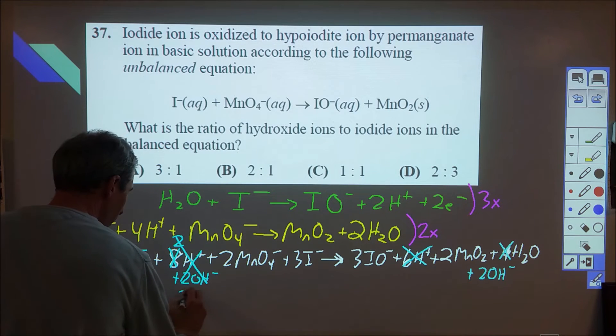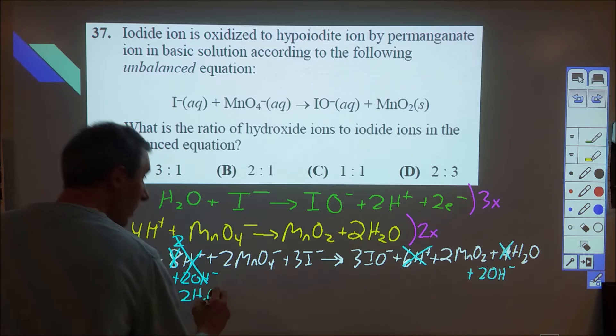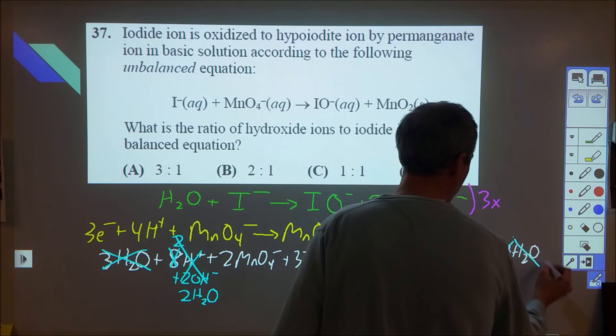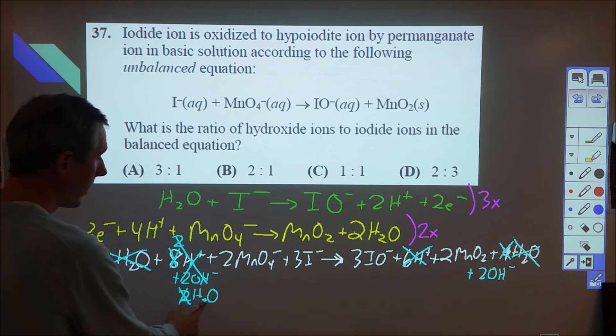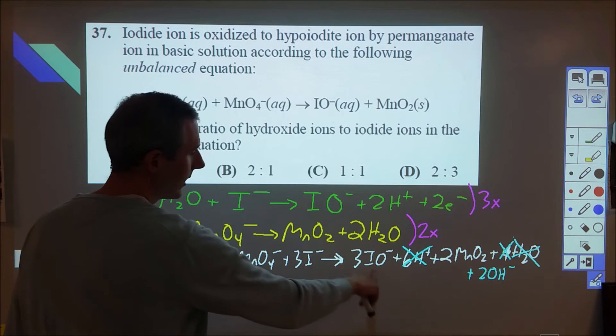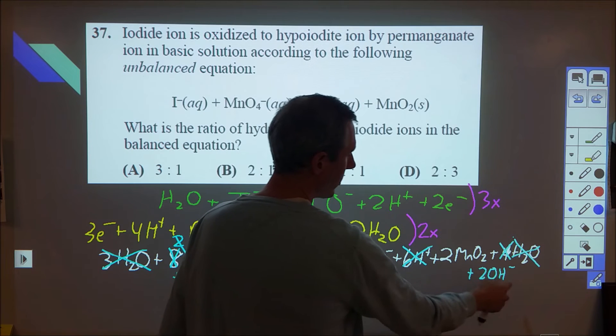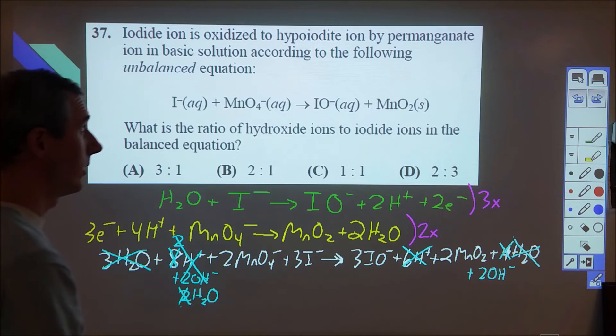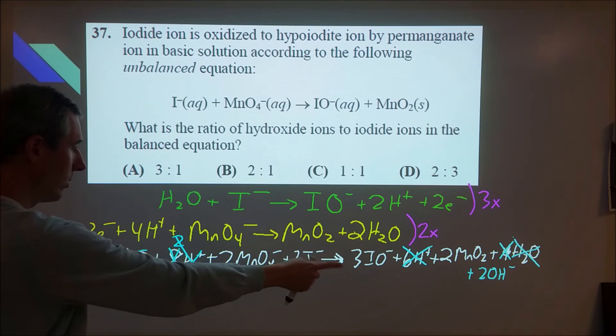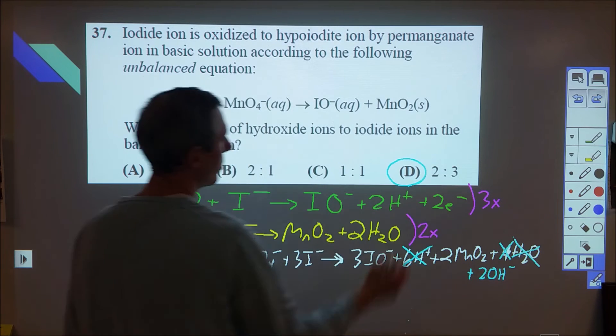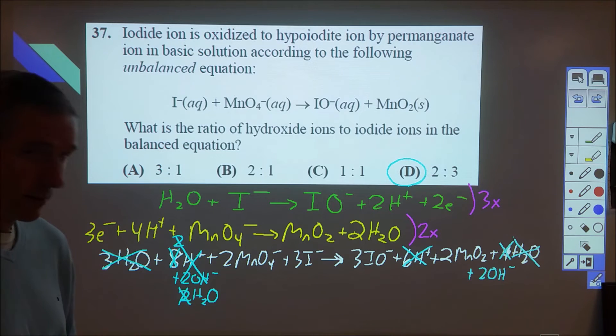These then change to become two waters, which then cancels out this, it cancels out one of those. So we end up with a water plus two permanganates plus three iodides, and it's three hypoiodides, two MnO2s, and two hydroxides. So there's our balanced reaction. It says, what's the ratio of hydroxide to iodide? We have two to three. So D is our choice, and D is the correct answer.